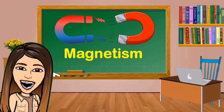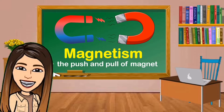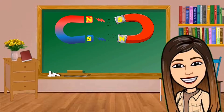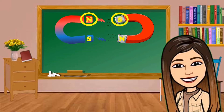Magnetism is the push and pull of a magnet. If the poles are different, they will pull together or attract each other. If the poles are the same, they will push apart or repel each other.